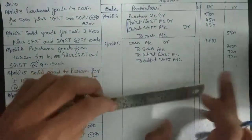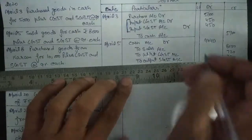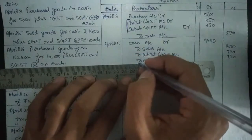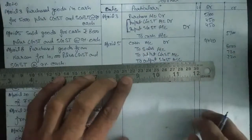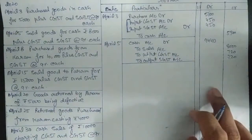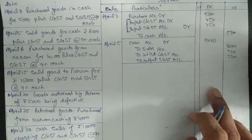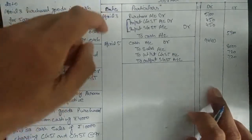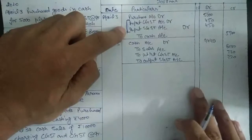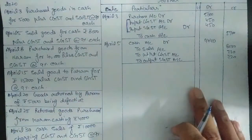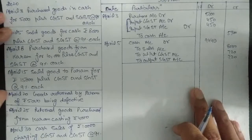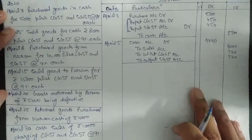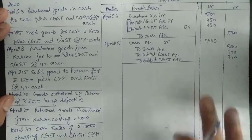We are selling goods of ₹8,000 but the customer also needs to pay GST, so we are charging GST from him. We need to pay that GST to the central government, so we have no profit from it. Because we also paid GST to someone when purchasing goods, we charge it from our customer so we can set off the amount we paid and pay only the remaining amount to the government.